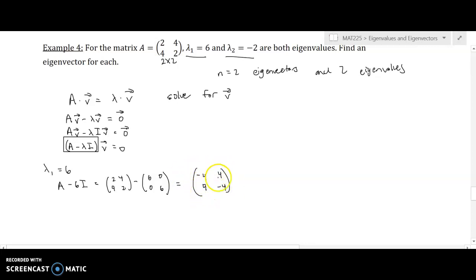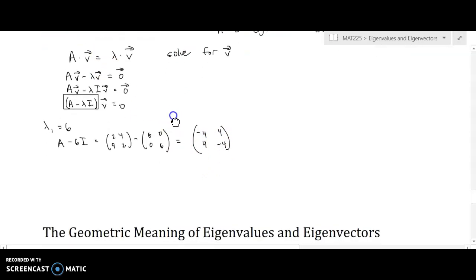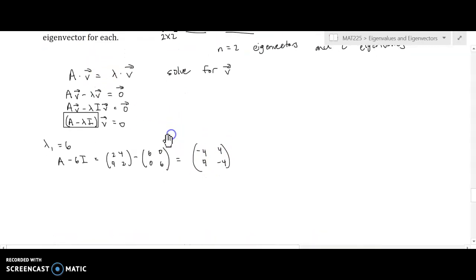So this system will have infinitely many solutions. Another way of thinking about this is the determinant of this matrix, negative 4 times negative 4 is 16, minus 16 is equal to 0. Therefore, this matrix will have infinitely, this system that we're about to solve will have infinitely many solutions.